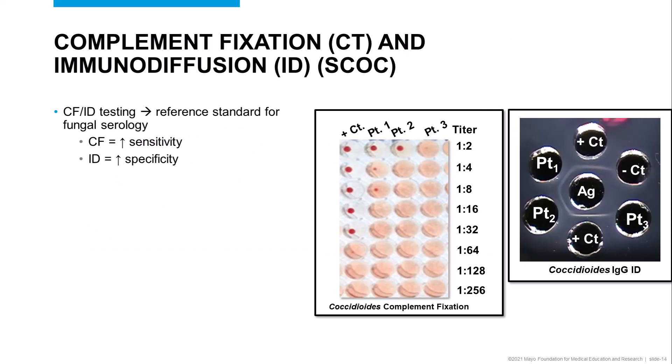For multiple reasons that I'll list on the following slides, we strongly encourage and recommend that clinicians order this reflexive algorithm first for suspected cases or for screening purposes to assess for coccidioides infections, rather than first ordering the CF/ID-only panel. In order to understand the benefit of starting with an EIA screen, it's important to understand complement fixation and immunodiffusion testing methods. These two methods were first developed in the 1940s and 1950s and remain the reference standard methods for fungal serology because, when used together, the CF assay provides increased sensitivity, whereas the immunodiffusion or ID assay provides increased specificity. However, there are challenges, starting with the high sample volume required — a minimum of 1.2 milliliters — which we frequently do not receive, requiring the lab to contact the client site and request more, ultimately leading to delayed testing.